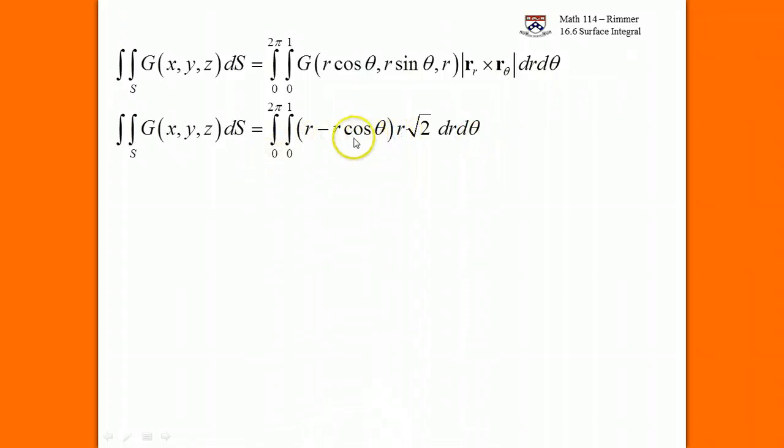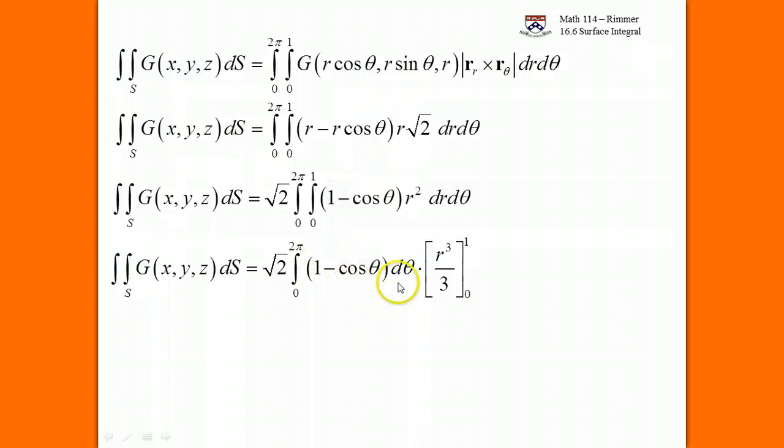What happens is we can factor out this r and be left with 1 minus cosine theta, multiply by this r. We can pull out this root. We end up with root 2 coming outside. And two simple calc 1 integrals. We go from 0 to 1 on r squared, and we go from 0 to 2π on 1 minus cosine theta.